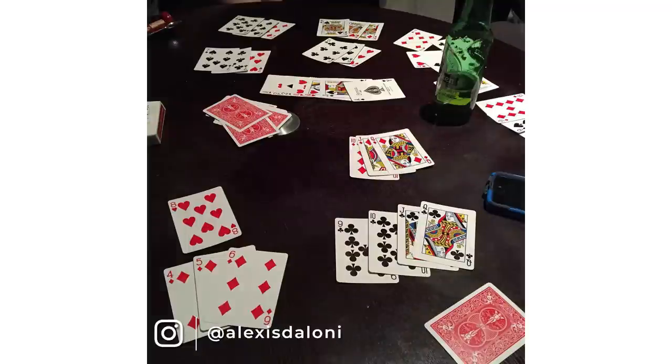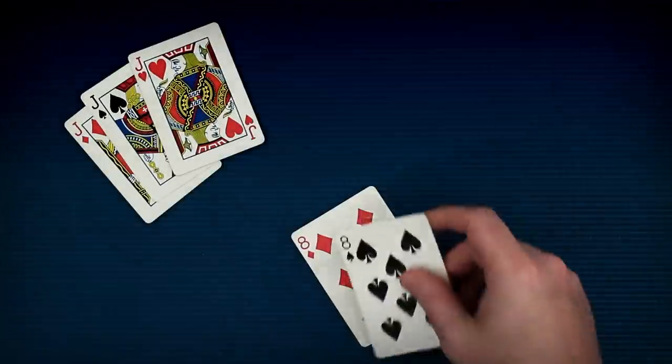Melds are groups of cards. There are two kinds. There is a set, which is three or four cards of the same type. Three jacks make a set. Four eights make a set.